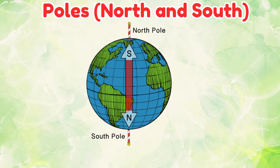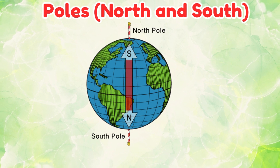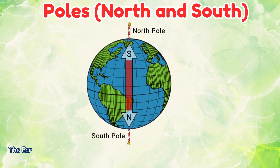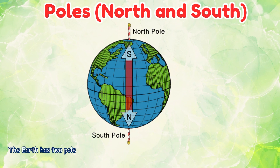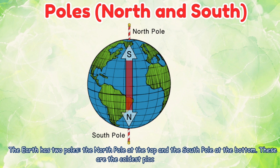Poles, North and South. The Earth has two poles: the North Pole at the top and the South Pole at the bottom. These are the coldest places on Earth.